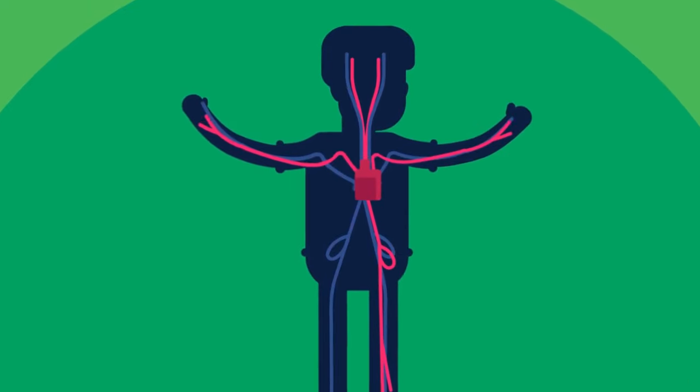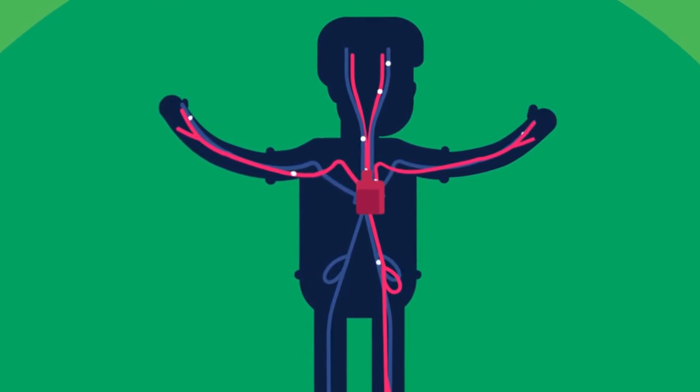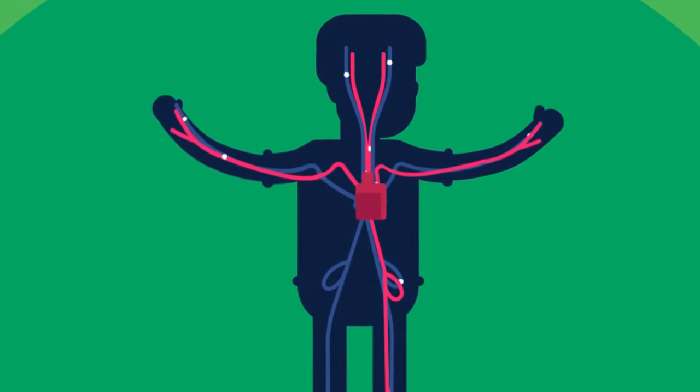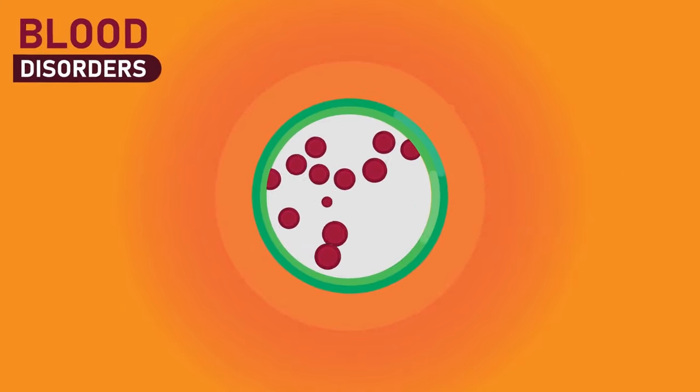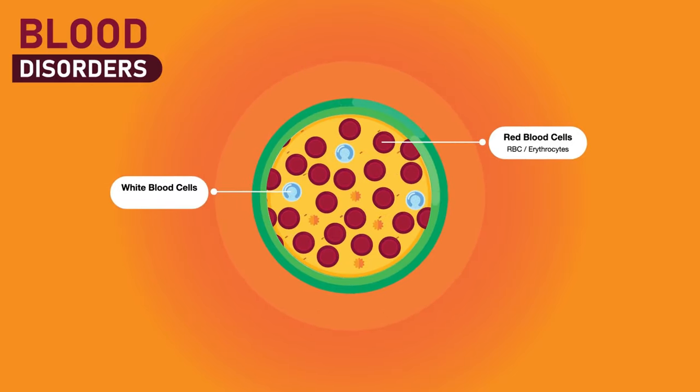Blood is a body fluid in humans and other animals that delivers necessary substances such as nutrients and oxygen to the cells. In vertebrates, it is composed of blood cells suspended in blood plasma. The blood cells are mainly red blood cells, also called RBCs or erythrocytes, white blood cells, also called WBCs or leukocytes, and platelets.